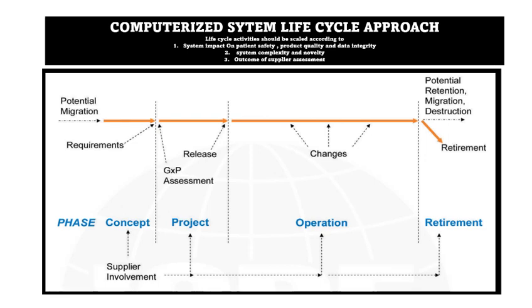Second, the life cycle activities should be scaled according to system complexity and novelty. The procured system may be simple or complex in nature and may be commercially available or newly launched in the market. Based on the complexity, you need to validate your system.